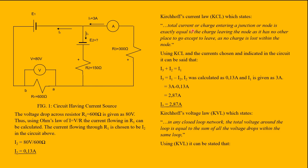Kirchhoff's current law, KCL, states that the total current entering a junction or node is exactly equal to the charge leaving the node, as no charge is lost within the node. Using KCL, it can be said that I3 plus I2 equals I1, so I3 equals I1 minus I2. With I2 at 0.13 amps and I1 at 3 amps, I3 equals 3 minus 0.13, which is 2.87 amps.